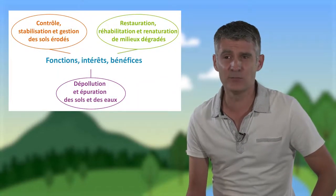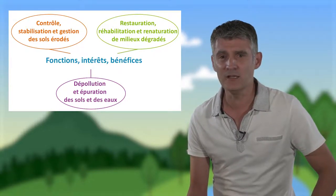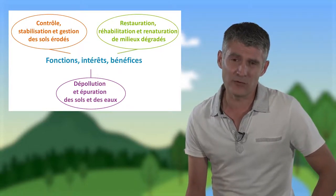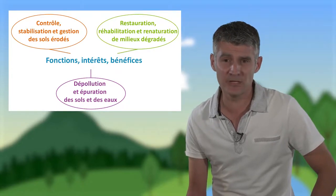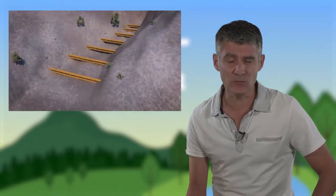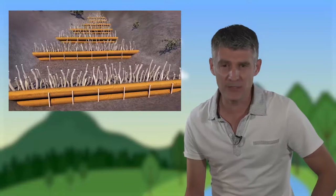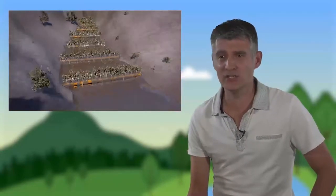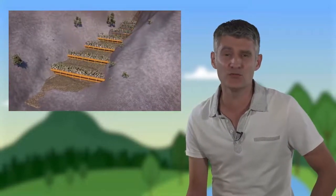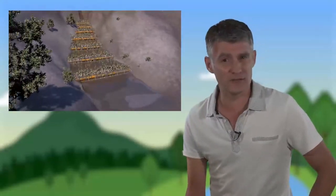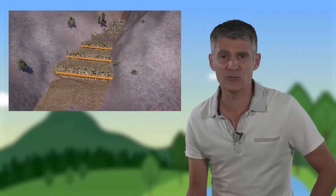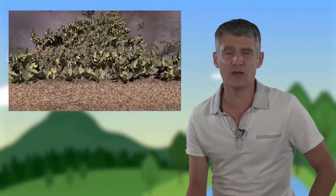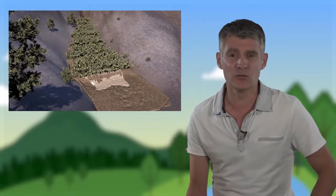Le génie végétal peut remplir différentes fonctions, correspondant aux trois grandes finalités données lors de sa définition. On va voir qu'il peut présenter différents intérêts et donc différents types de bénéfices. Par exemple, une stratégie innovante de génie végétal a été développée pour contribuer à prévenir les inondations dans les bassins versants : le principe est de piéger des sédiments fins responsables d'un exhaustement du lit des rivières à l'aval, contribuant ainsi à moins d'inondations, tout en réinstallant une couverture végétale et participant à la restauration écologique de milieux dégradés.